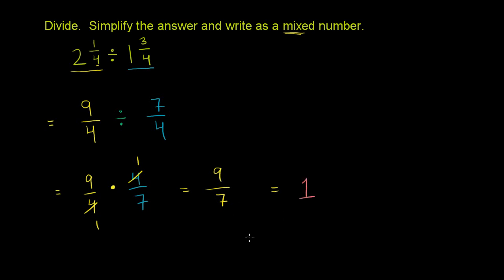Well, it goes into it exactly one time. But when you take 7 into 9 one time, what do you have left over? Well, you're going to have 2 left over, right? 7 times 1 is 7, and you're going to have 2 left over. You need 2 more to get to 9. So you're going to have 2 left over. So this is 1 and 2/7. And we're done.